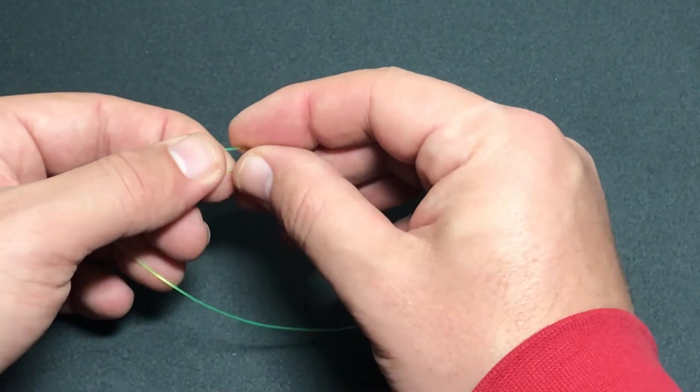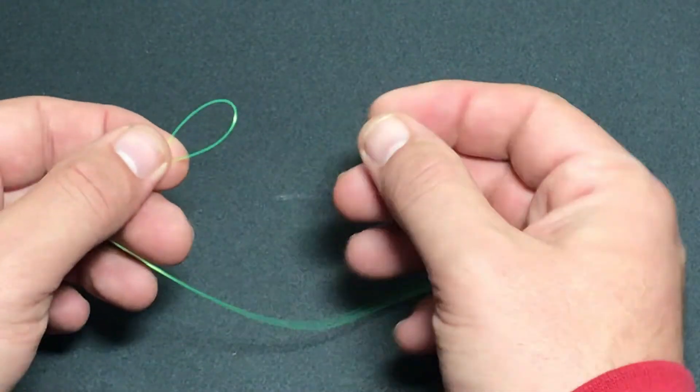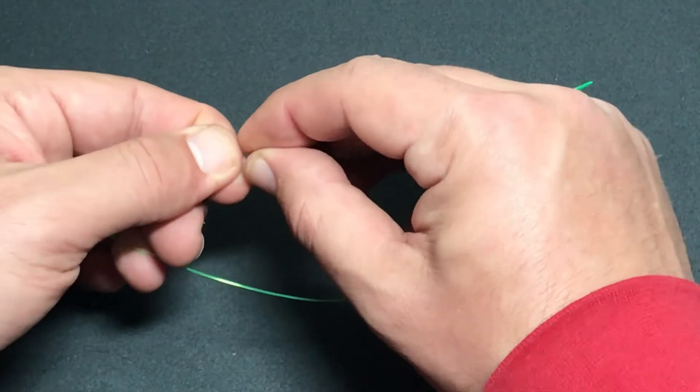Now to put a hook on our dropper loop is really quite simple. All we're going to do is we're going to pinch the top of the loop to form a point.